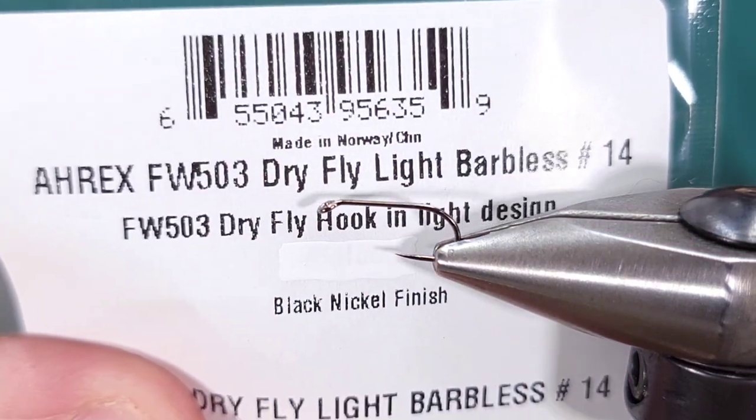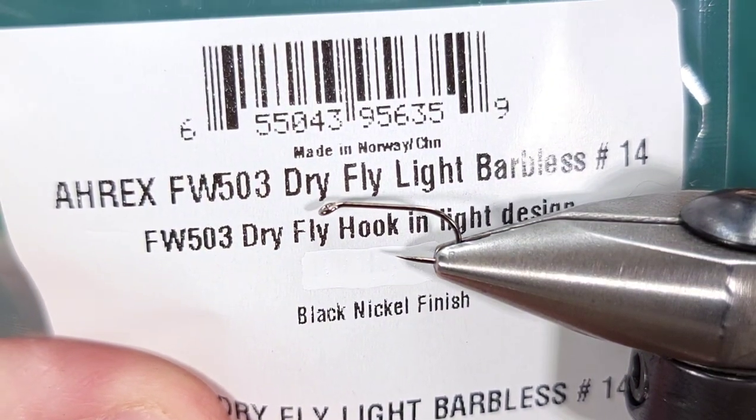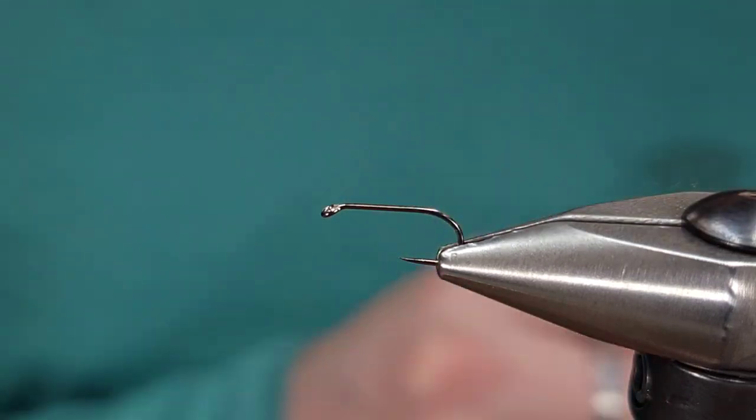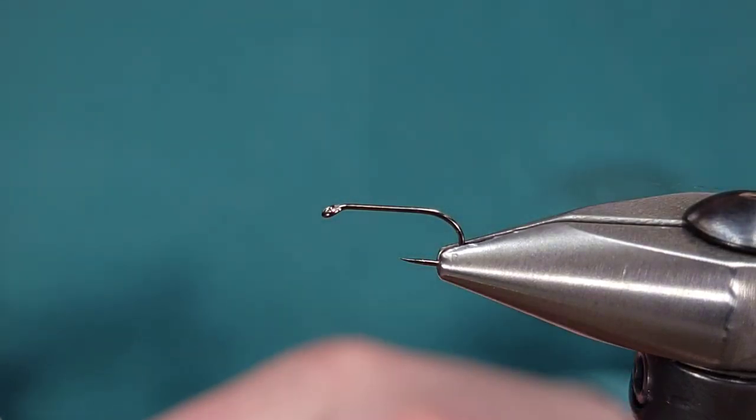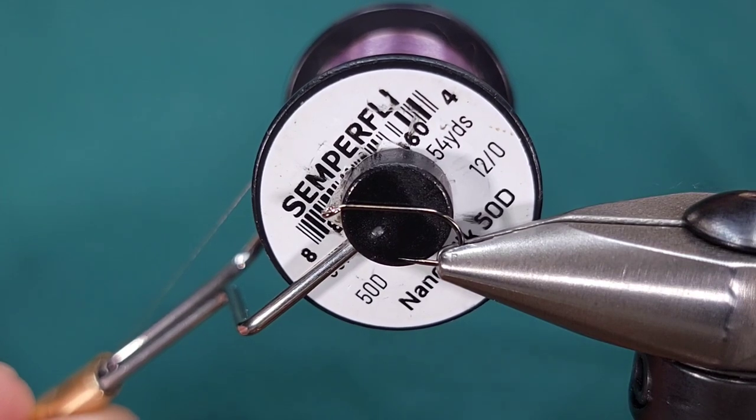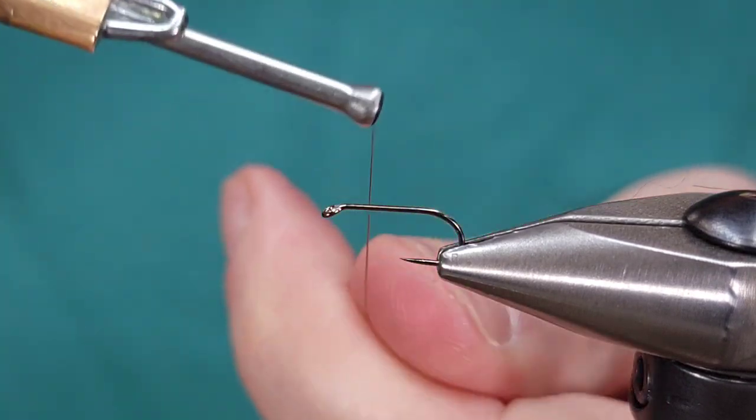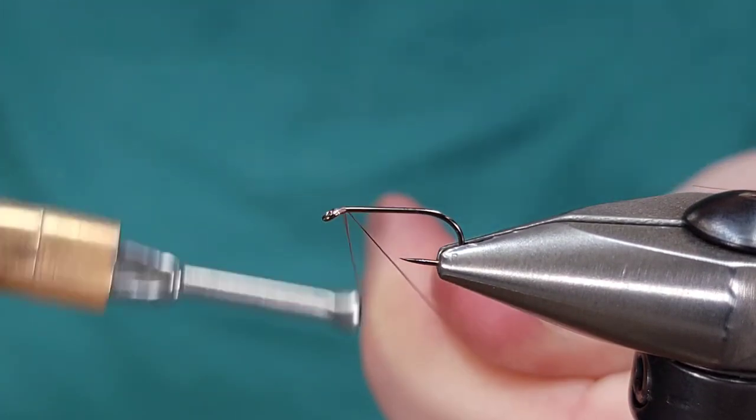For the hook today I'm using an Arex Freshwater 503 dry fly hook in size 14. You can obviously go smaller if you need. For the thread I'm using Semperfli Nano Silk in 12 watt or 50 denier.